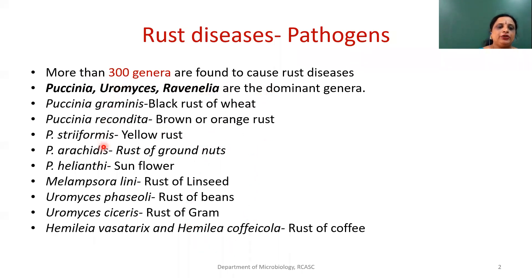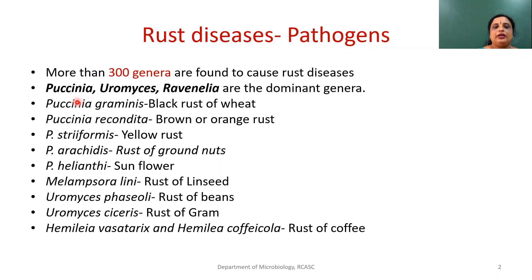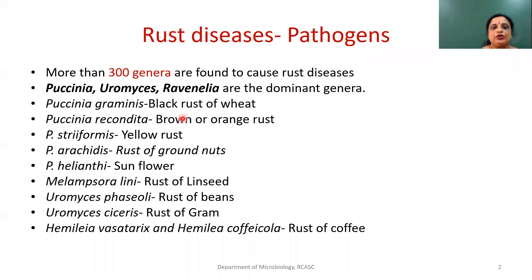Some of the dominant groups of rust disease-causing fungi are listed here. Students, note the dominant genera: Puccinia is one of the dominant groups causing rust disease, followed by Uromyces, Ravenelia species, etc. Among these, Puccinia is one of the dominant organisms causing rust disease in various groups of organisms.